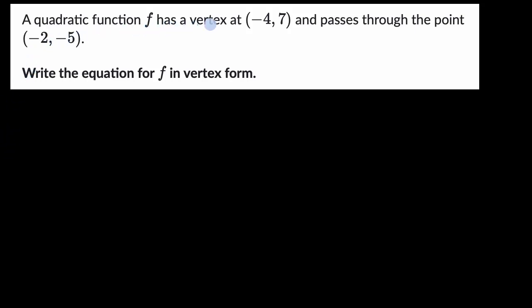We're told a quadratic function f has a vertex at negative four comma seven and passes through the point negative two comma negative five. Write an equation for f in vertex form. So pause this video and try to work that out before we do that together.